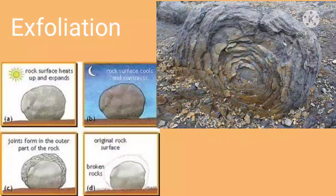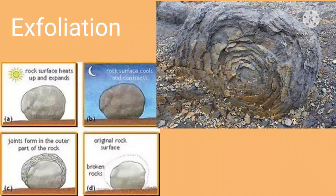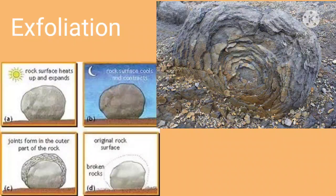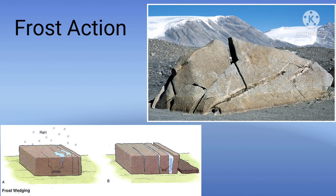Due to continuous heating and cooling, expansion and contraction of the layers causes cracks to develop on the outer surface of the rock. Air and water enter into these cracks, and subsequently the layers of rock are peeled off like layers of an onion. This type of mechanical weathering is also known as exfoliation or onion peeling.